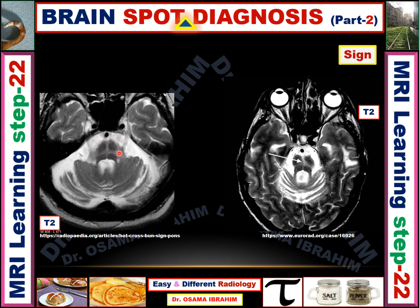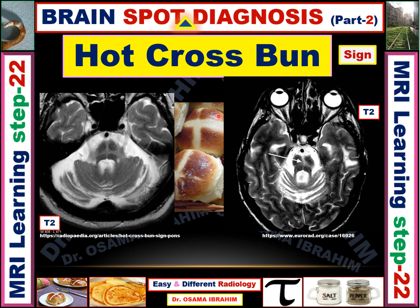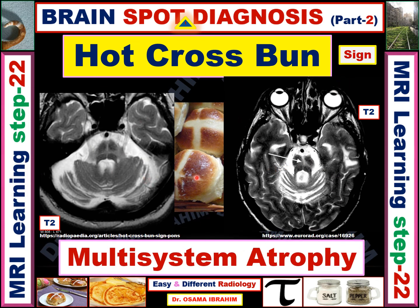The bones show abnormal high signal on T2, which looks like a specific pattern. This is called the hot cross bun sign. This is another patient showing the same sign — abnormal high signal within the bones of the posterior fossa, with the fourth ventricle visible and the cerebellum appearing atrophied. The hot cross bun sign represents multi-system atrophy as the diagnosis.